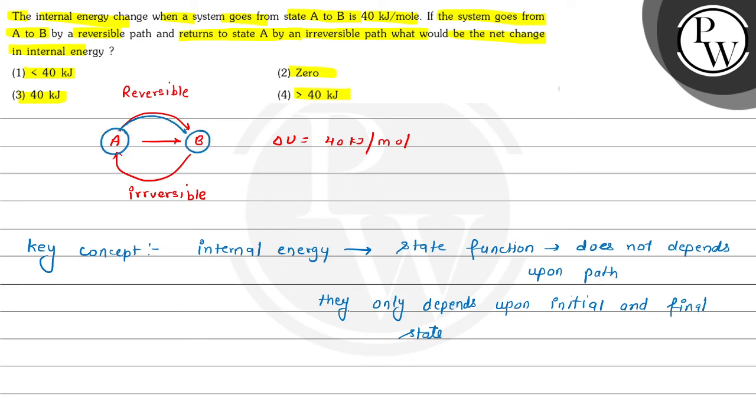So, we can write here ΔU is equal to U final minus U initial. Now, if both initial and final states are the same, so change in internal energy should be equal to zero.